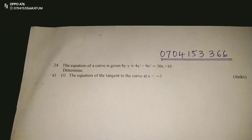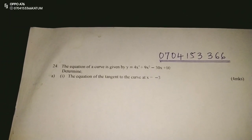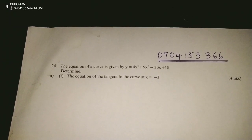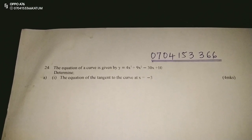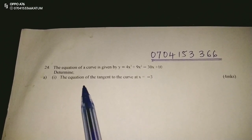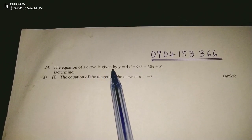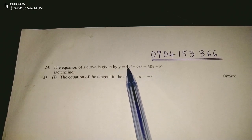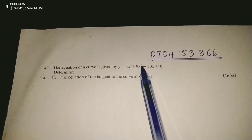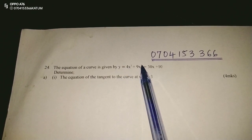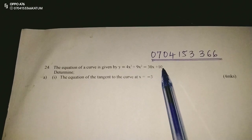Welcome to this mathematics lesson. We are continuing with mathematics paper 1, number 24, on differentiation. The equation of the curve is given by y equals 4x³ plus 9x² minus 30x plus 10.